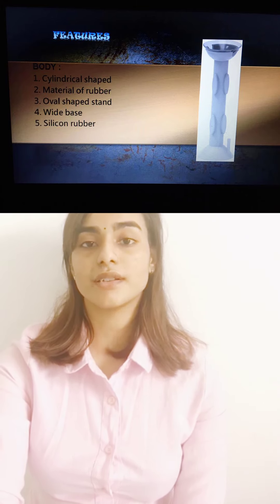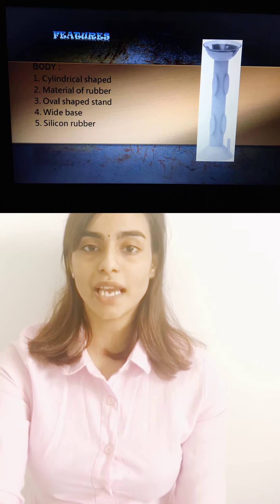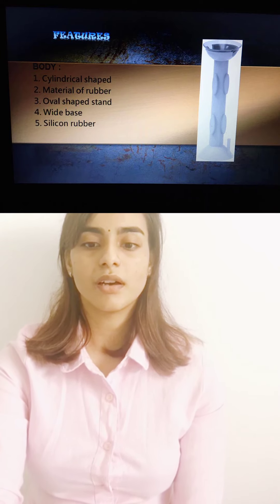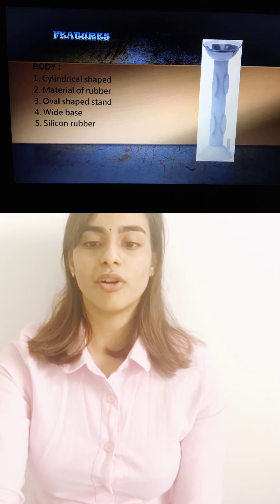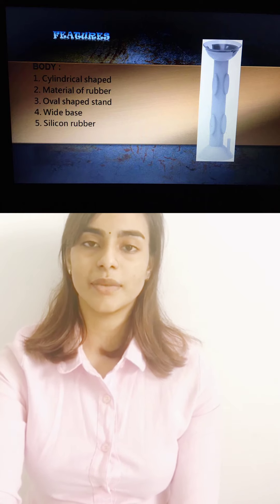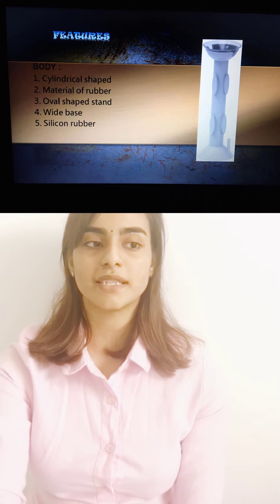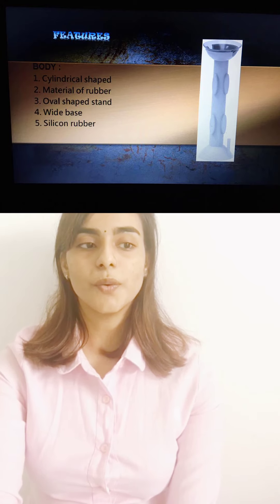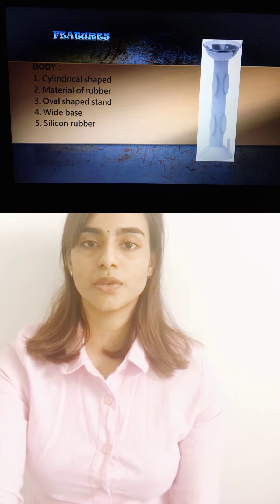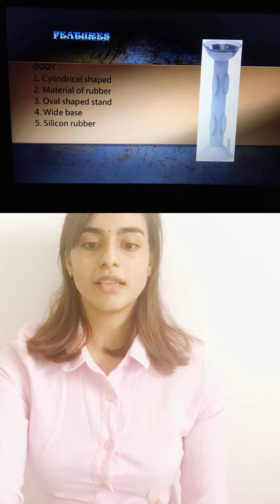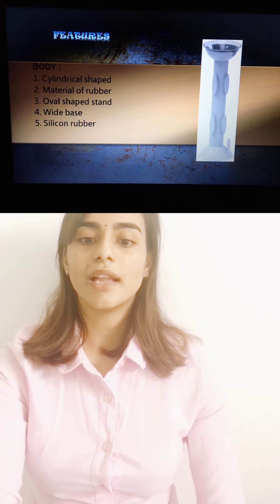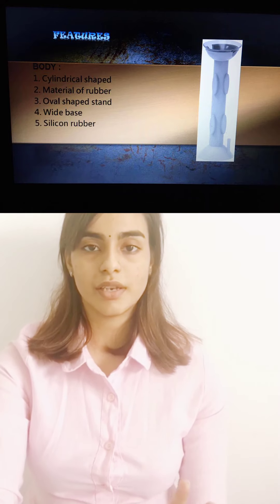The stand is oval shaped with a wide base, so it can be placed anywhere and will be stable. It will be very difficult for it to fall down, so there are no chances of it falling. It won't damage the body as well. The wide base provides stability so that it can be placed anywhere. The inside material is made out of silicon rubber. As far as I know, contact lenses are also made out of silicon, so when silicon and silicon attract, the contact lenses will have a very strong grip on the Lenswearer and there will be no chance of them falling off.